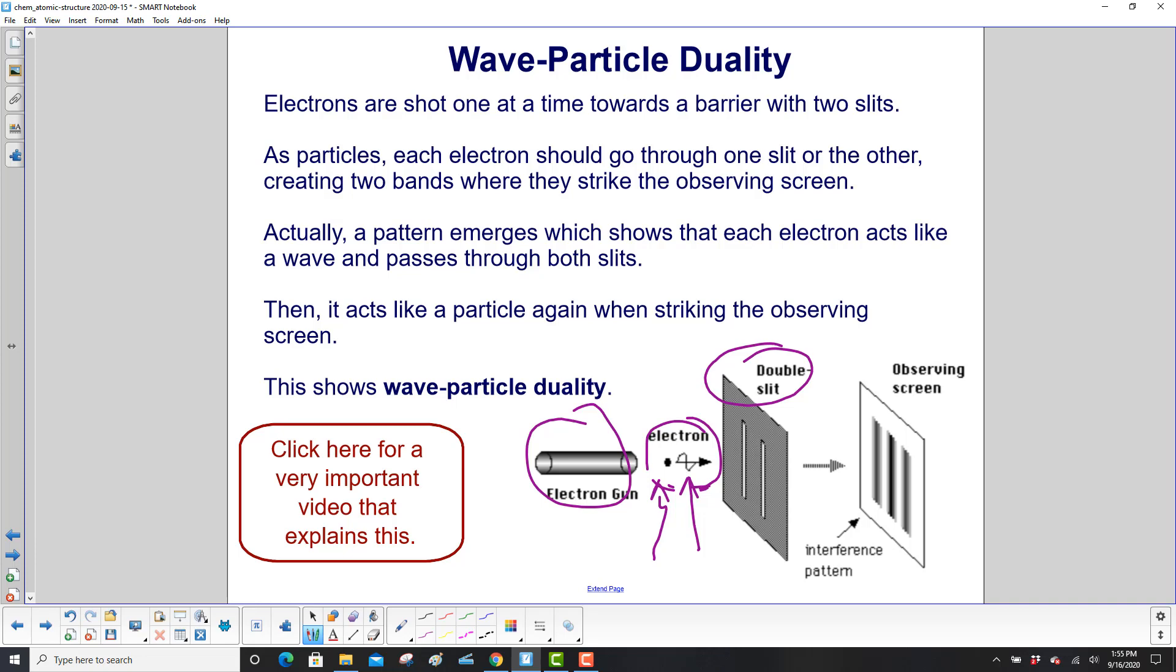Actually, however, a pattern emerges which shows that each electron acts like a wave and passes through both slits. Then it acts like a particle again. So here's the wave, here's the particle, and back here it acts like a particle again when striking the observing screen.